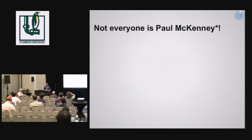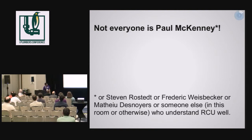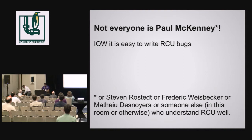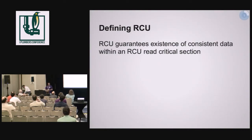So why is this a problem? And there's an asterisk there. It's easy to write RCU bugs, and it's sort of hard to debug those. The fun thing is that when I started discussing this problem with my advisor, his first question was: what is RCU?